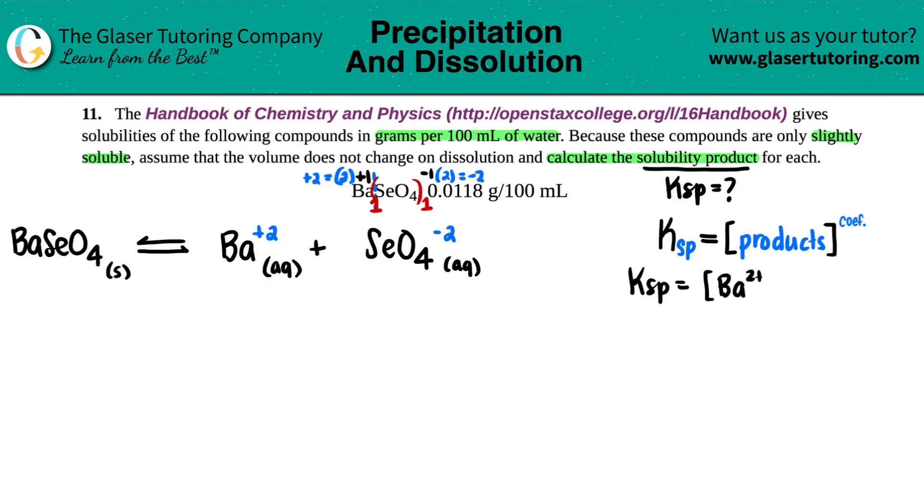So we have Ksp equal to the concentration of the two ionic products, Ba 2 plus times SeO4 2 minus. Keep in mind that they are raised to their coefficients, but since here they were no numbers in front, that just means that there were one and one. So you can raise them to the first, but anything raised to the first is itself.